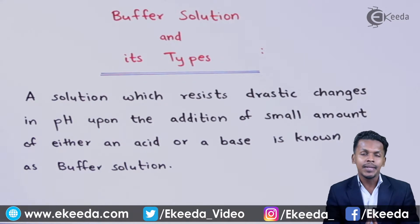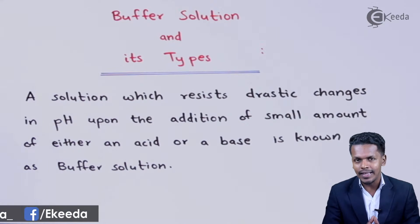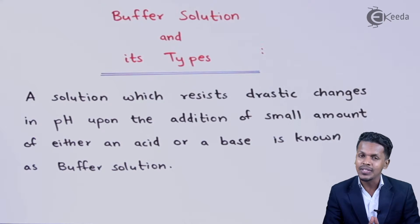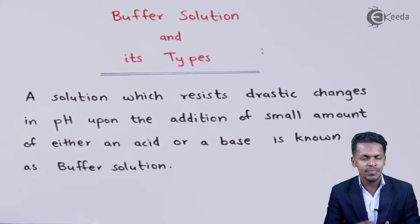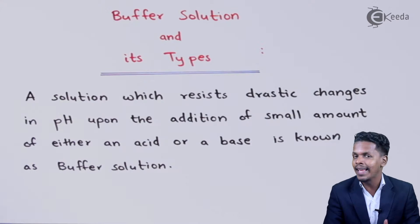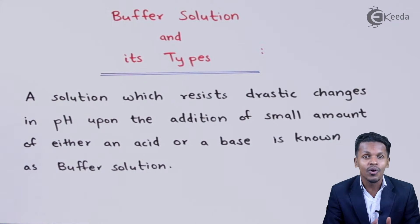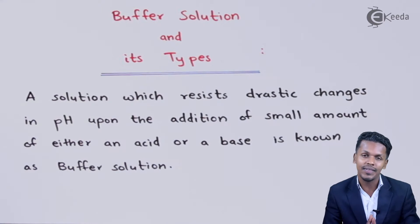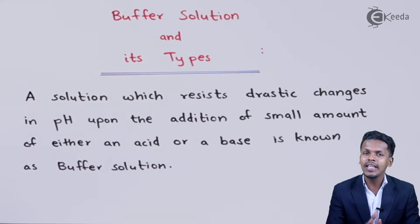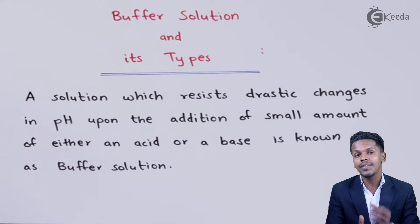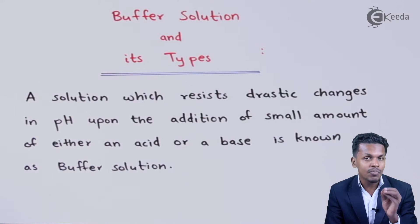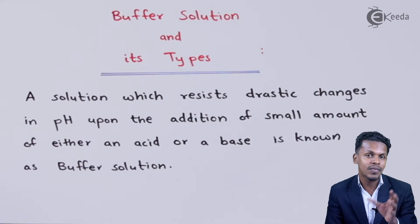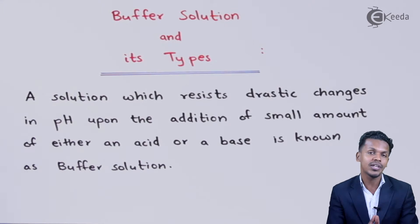Let me elaborate this. Suppose if we have a solution of HCl with a particular pH value, and suppose we are adding a small quantity of a strong base like NaOH — obviously we could see that the pH of that HCl solution will change and tend towards neutrality, that is towards pH 7. So a drastic change can be observed even with a small amount of base added.